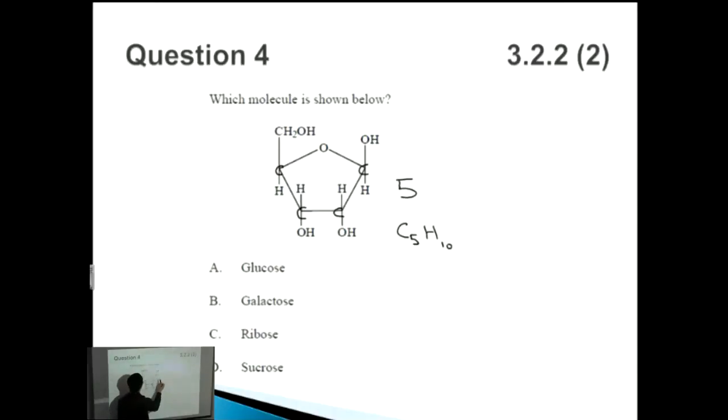And the number of oxygens: one, two, three, four, five. So there's five oxygens. And you have to know that anything that is C5H10O5, or most things that are C5H10O5, is ribose. And that's compared before with glucose, which was C6H12O6.